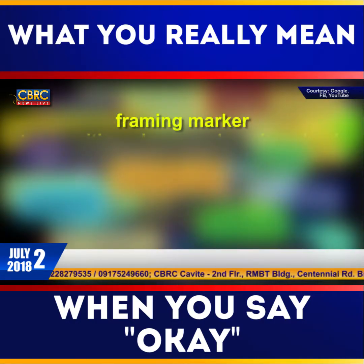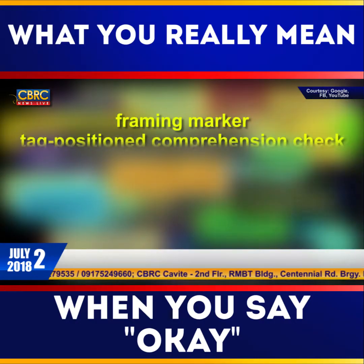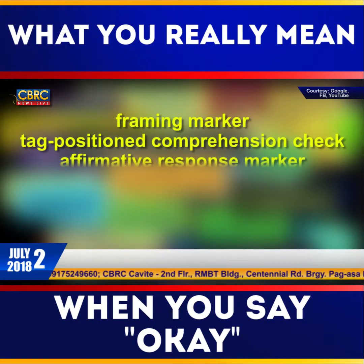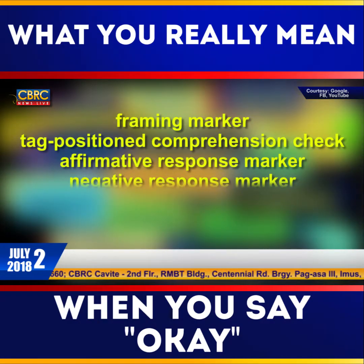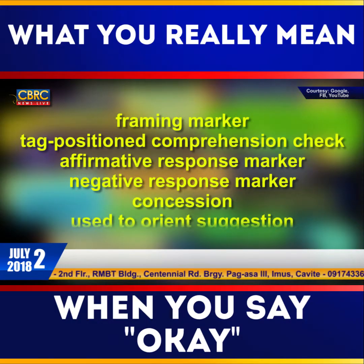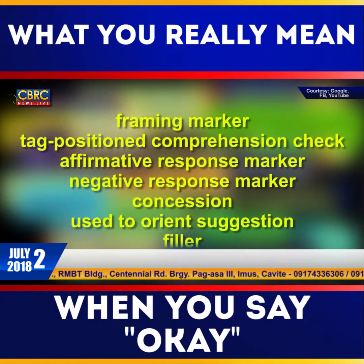These seven functions are: Framing Marker, Tag Position, Comprehension Check, Affirmative Response Marker, Negative Response Marker, Concession Used to Orient Suggestion, and as a Filler.